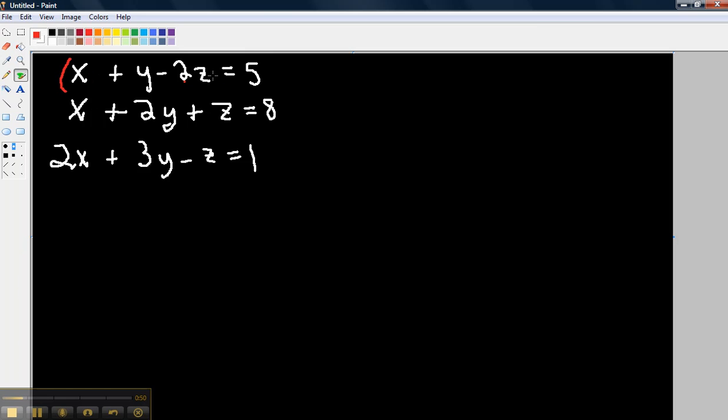So I'll put parentheses here, multiply by negative one over here, distribute, so now you're going to have negative x minus y plus 2z equals negative 5.